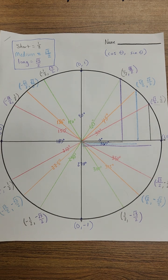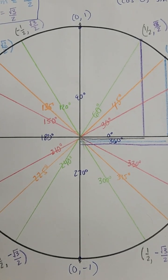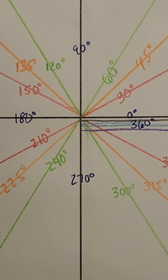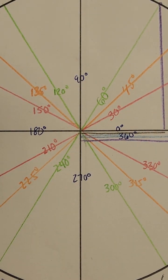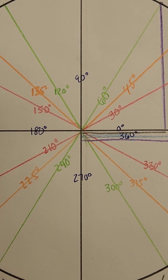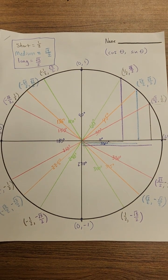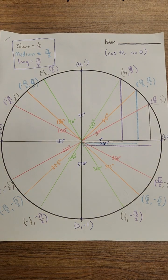Welcome to the second part of this activity. In the first part we looked at finding all of these angle measurements in degrees. But we've also talked about radians in this chapter, so now what we're going to do is look at what all of these measurements would be in radians.